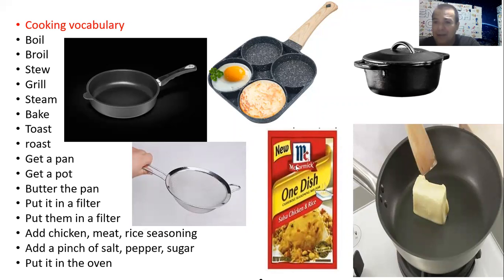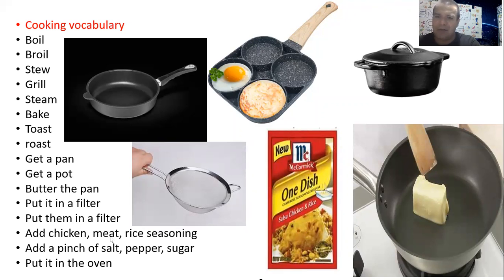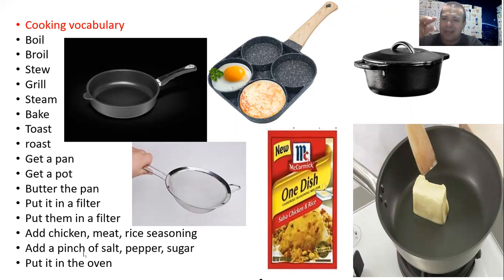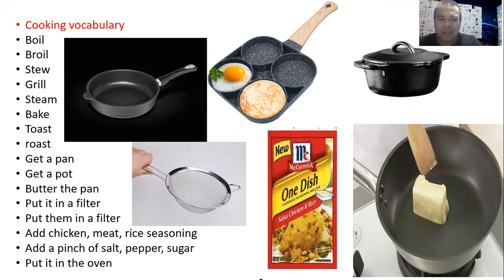So here we have a picture — basically this seasoning has two different ingredients or powders: chicken and rice seasoning. So the same is for the meat. When you go to the supermarket or mini market, you can buy this seasoning. Next one: pinch. When you are cooking, sometimes with your fingers you get a pinch — so you put a pinch of salt, a pinch of pepper, or a pinch of sugar.